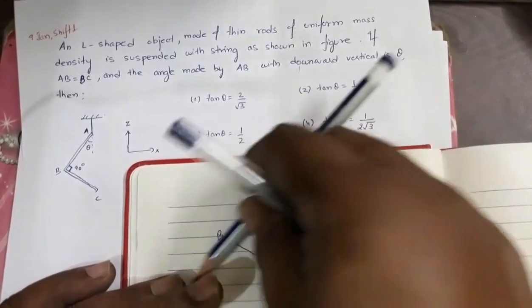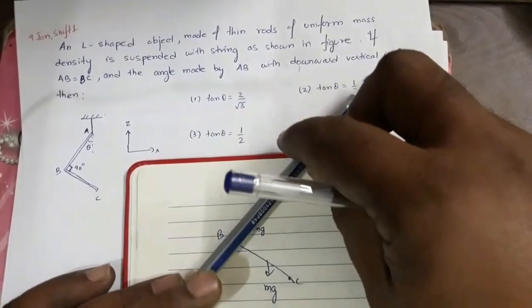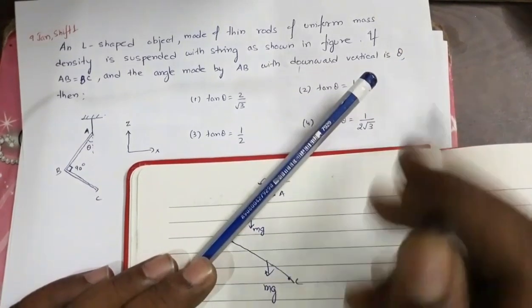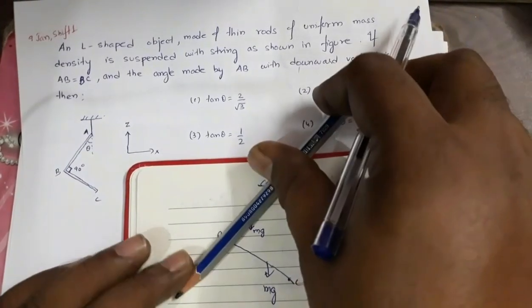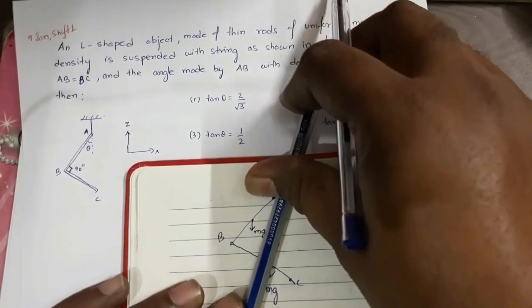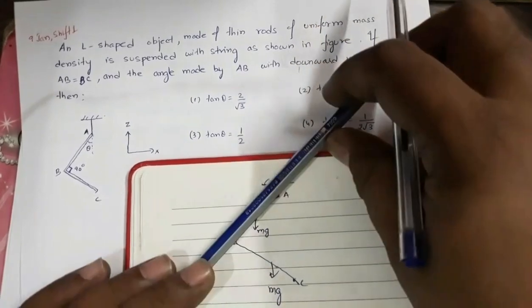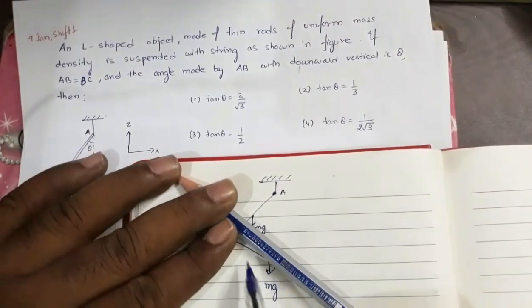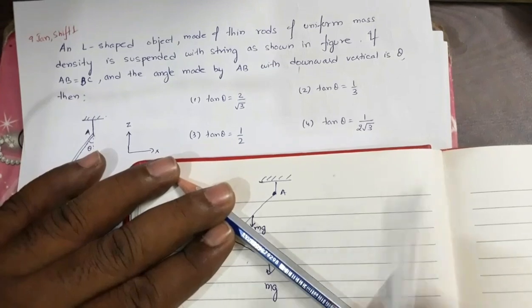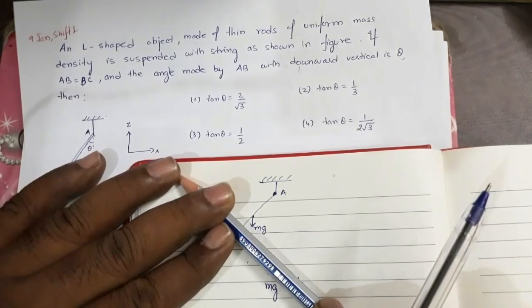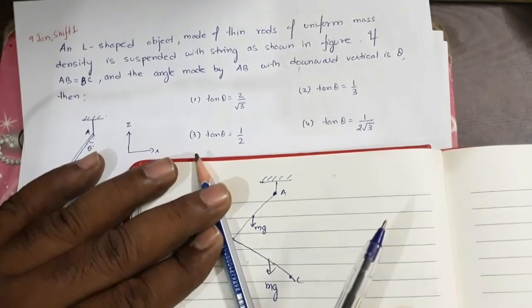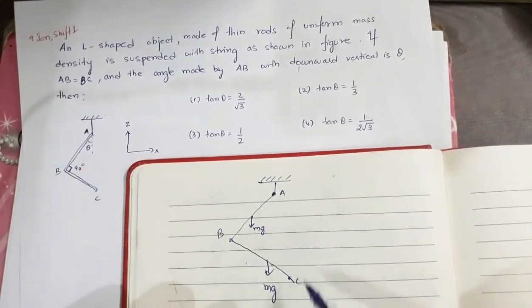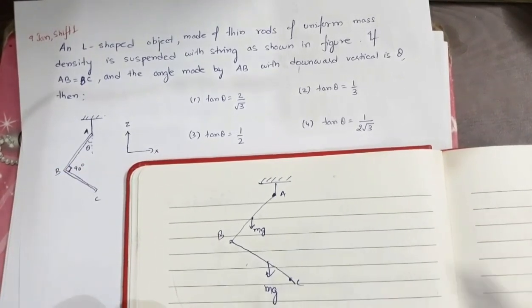For rod AB, this MG is acting in the downward direction, so it will try to rotate the rod in the anti-clockwise direction. And for rod BC, this MG is acting in the downward direction, so it will try to rotate the rod in the clockwise direction. So if the system is in equilibrium, these two torques should be equal.